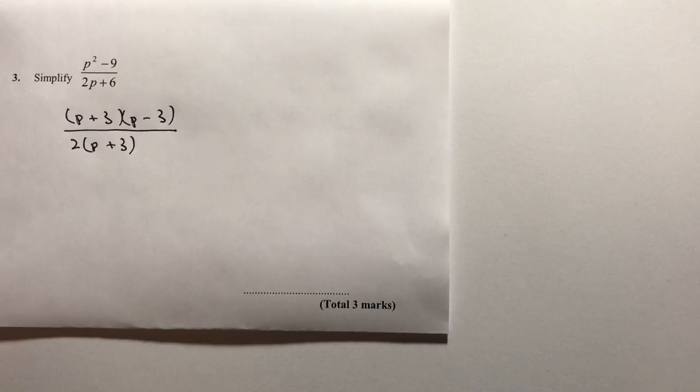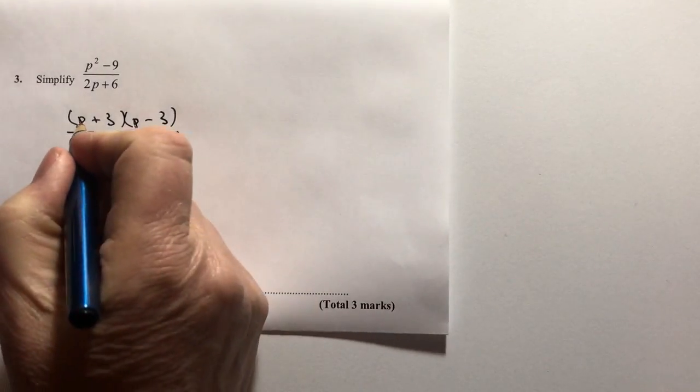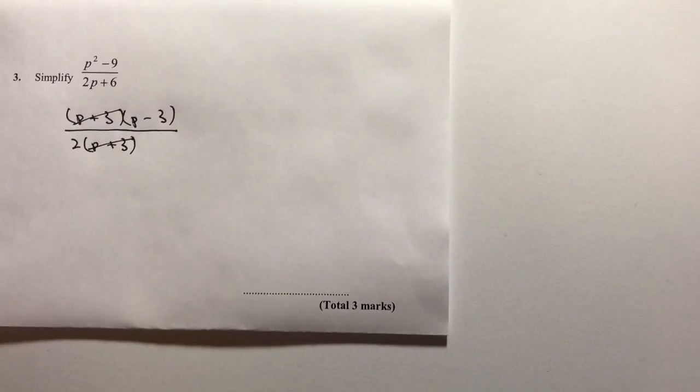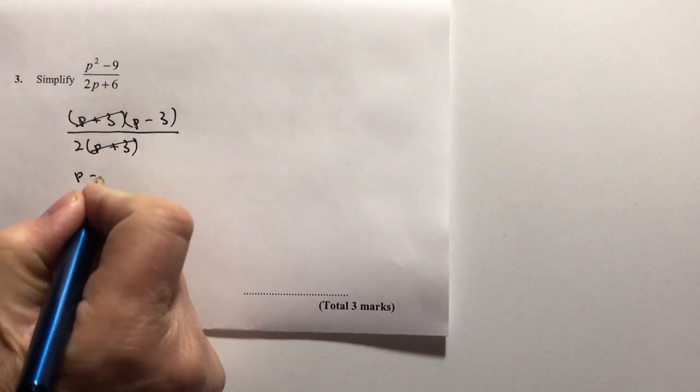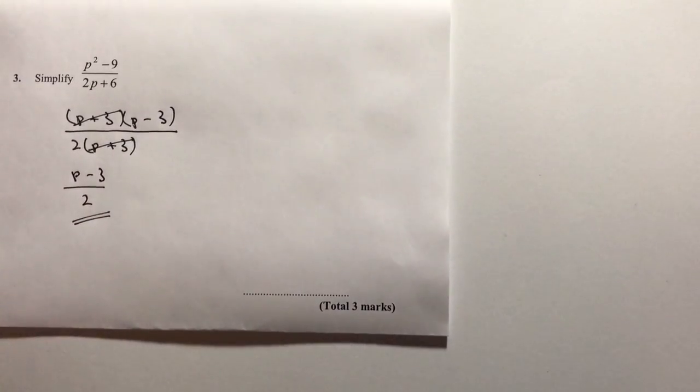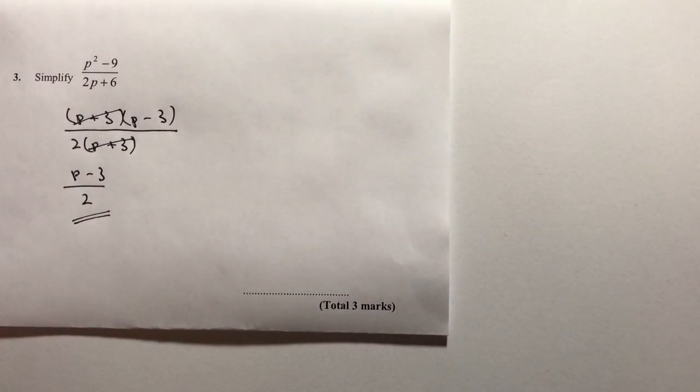And then I can divide both top and bottom by (p + 3), which gives me a simplified form of (p - 3) divided by 2. That would be the answer to this question.